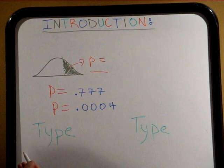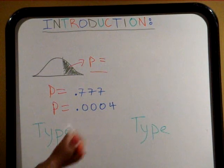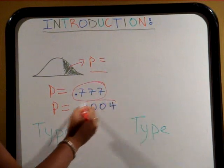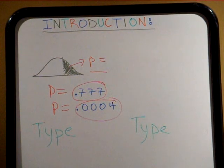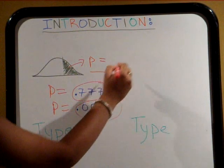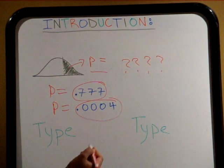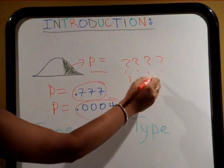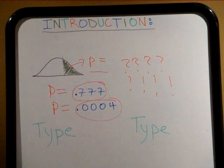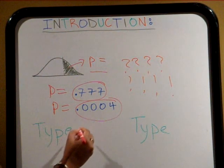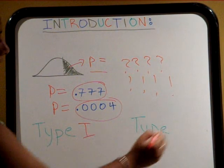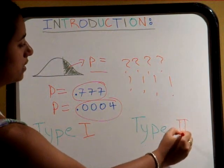But what happens when we cannot determine if p is large or if p is small? What if we assume p is large when it is actually small, or assume it is small when it is actually large? This would be a mistake. And in order to account for mistakes in hypothesis testing, we use the concepts of type 1 and type 2 errors.